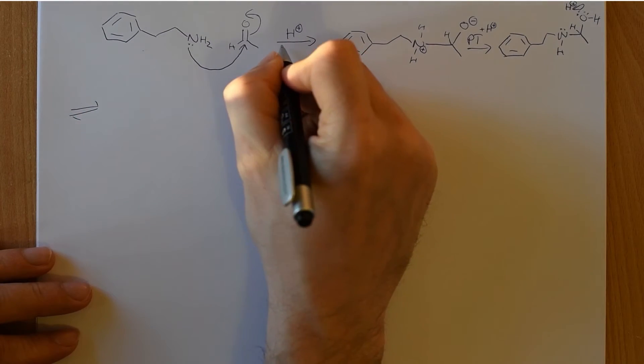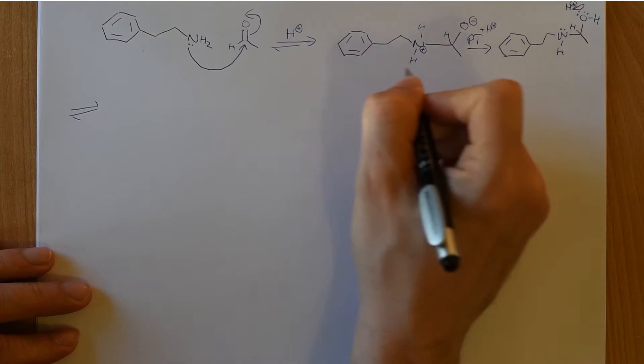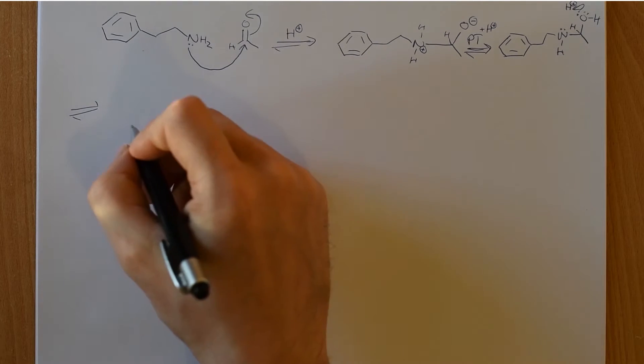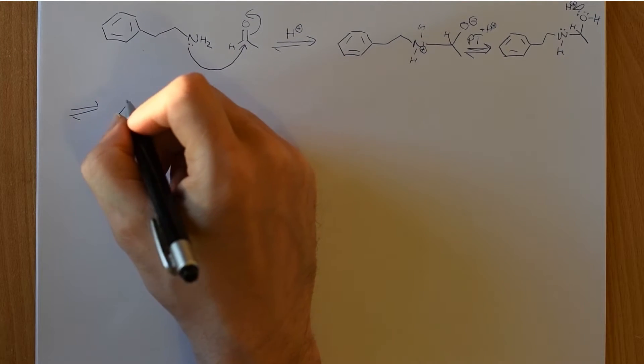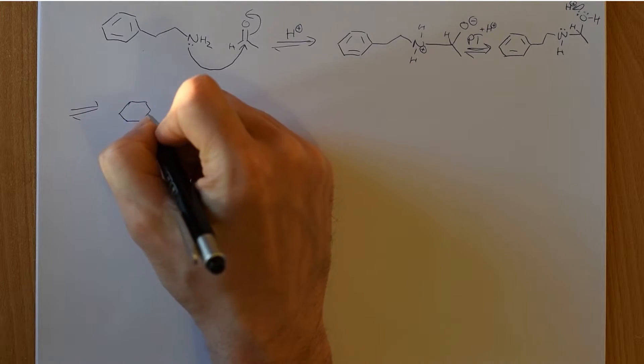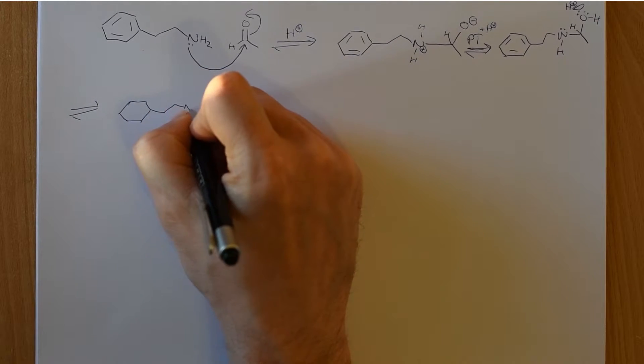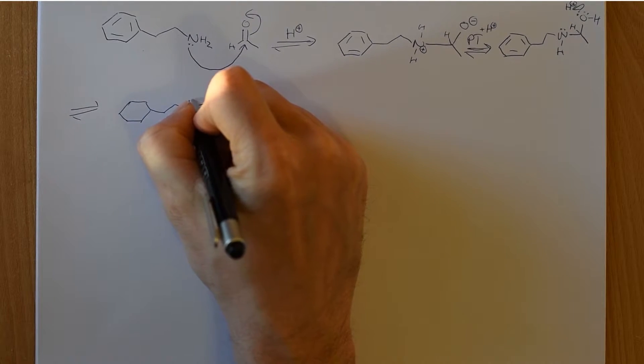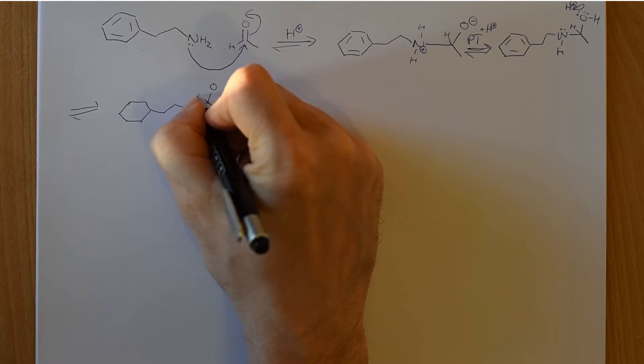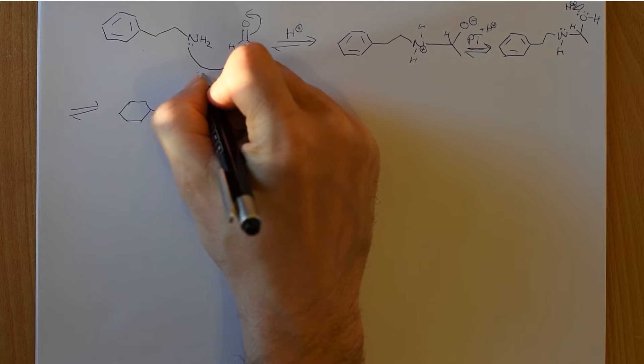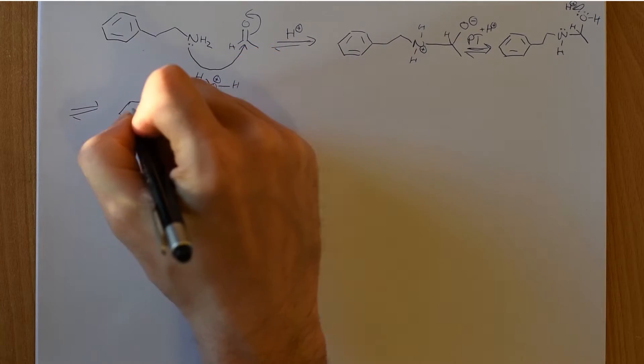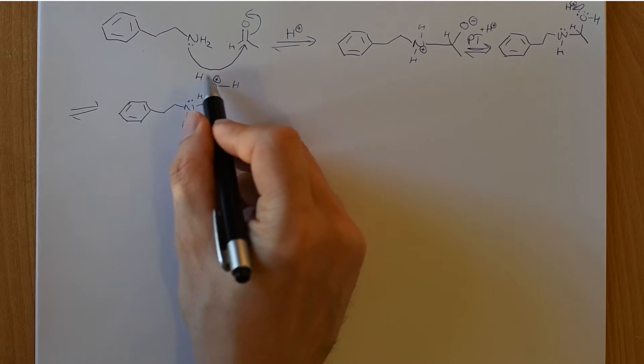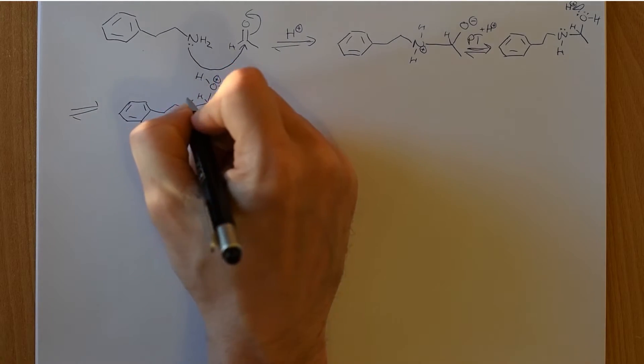And what we are going to have, and again all of these are reversible steps. So that can happen. They are all in equilibrium. But what we have after we protonate our oxygen on our tetrahedral intermediate is we have a very good leaving group attached. So this should be reasonably familiar. Here we have water ready to leave.